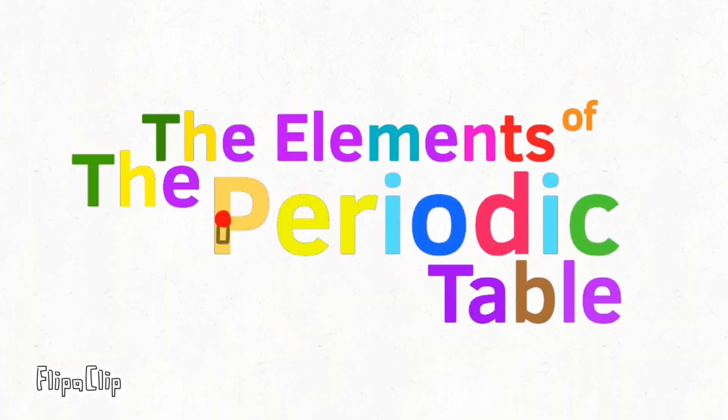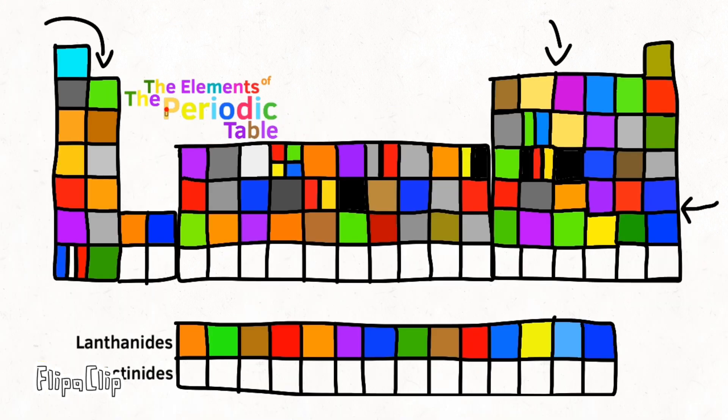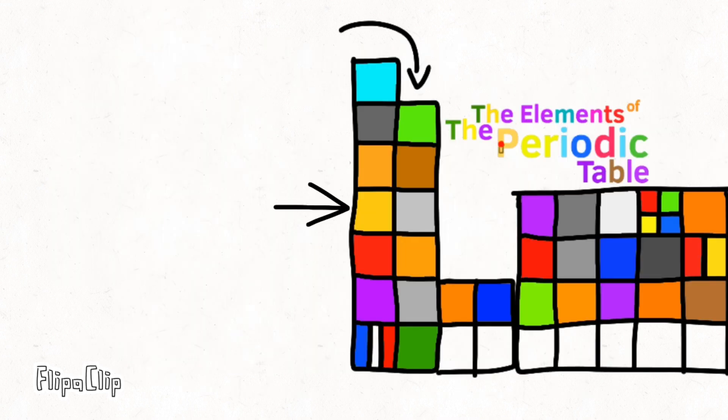This is the periodic table. Noble gas is stable, halogens and alkaline react aggressively. Each period will see new outer shells, while electrons are added to the right.